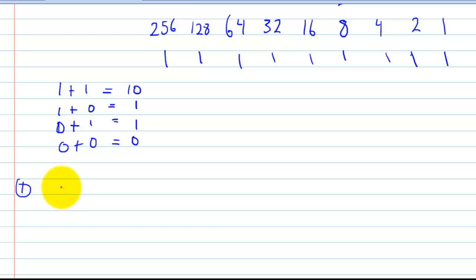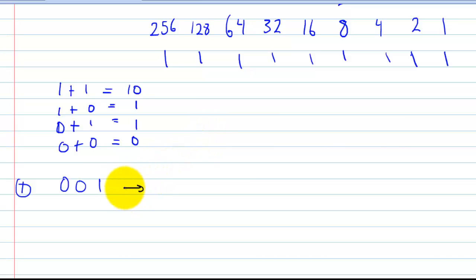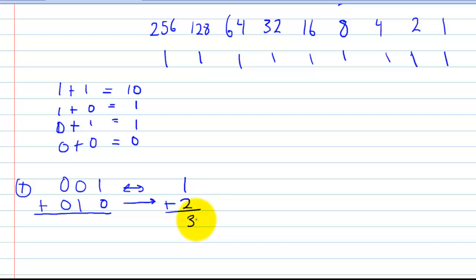For the first example, we're going to deal with two three-bit unsigned binary numbers. My first number is zero-zero-one, which in base 10 represents just one. We're going to add zero-one-zero to it, which in base 10 is two. So one plus two is three — if we add these binary numbers, we should get a result representing three. Adding bit by bit: one plus one gives zero with a carry, then zero plus one is one, and zero plus zero is zero.